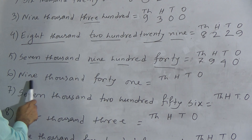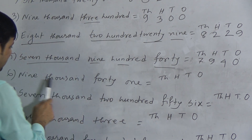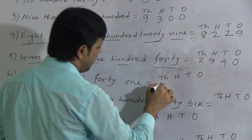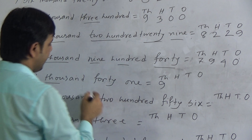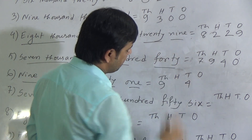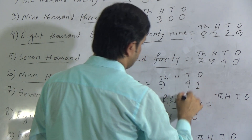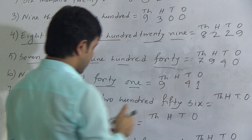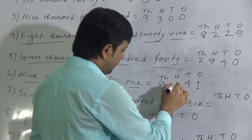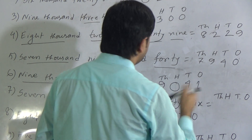Question 6: nine thousand and forty-one — 9041. We write 9 in the thousands position, then 41. To write 41, we need 4 in tens position and 1 in ones position. The hundreds position is blank here, so we fill it with 0. This is 9041.